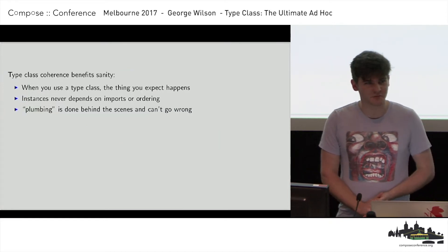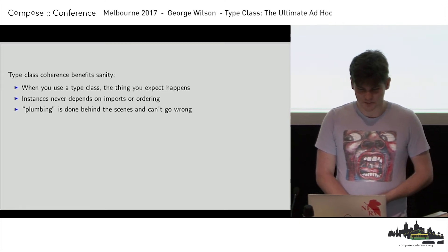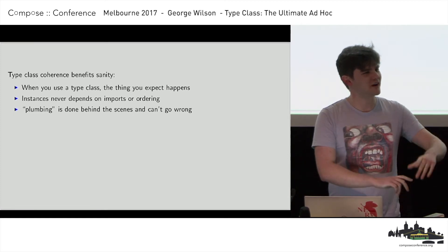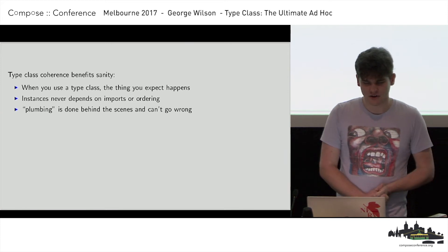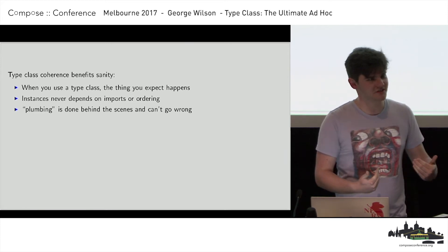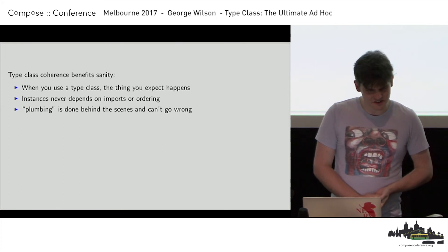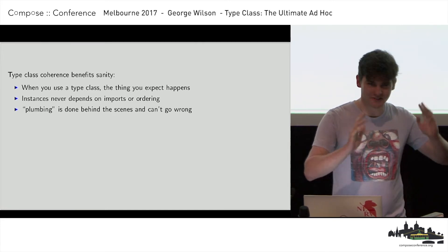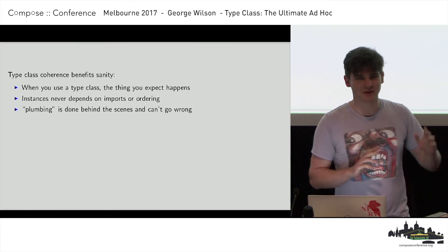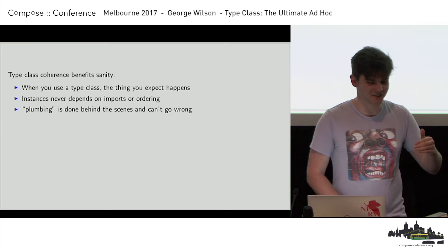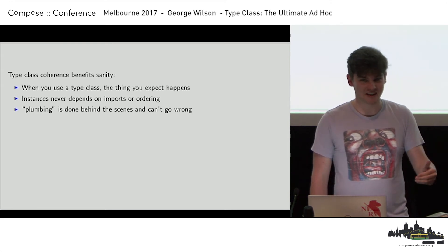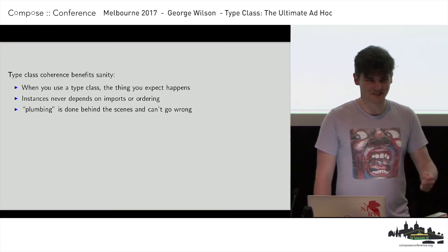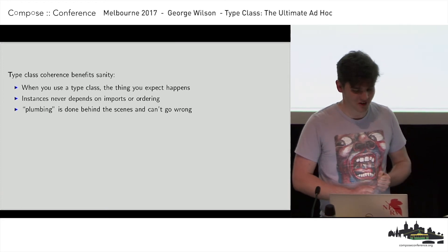Type class coherence benefits my sanity when writing programs. The thing I expect to happen, happens. Instances can never depend on my imports or the ordering of my definitions. There's zero or one, and I will always get it if it exists. It's just plumbing done behind the scenes for me that can't go wrong. With type classes, there's only one thing that can happen — and it does. So you don't have to worry about the plumbing going wrong.